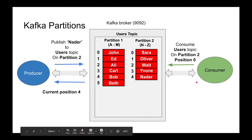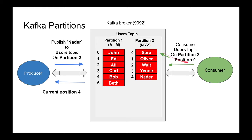A consumer can say 'I want to consume partition two starting at position zero,' and it will start reading from there, updating its position until it reaches the latest data and there's nothing more to read. You can see how fast this is because you only work with indexes and positions. This is not a relational database — you don't do 'SELECT * FROM topics WHERE first_name = Sarah.'